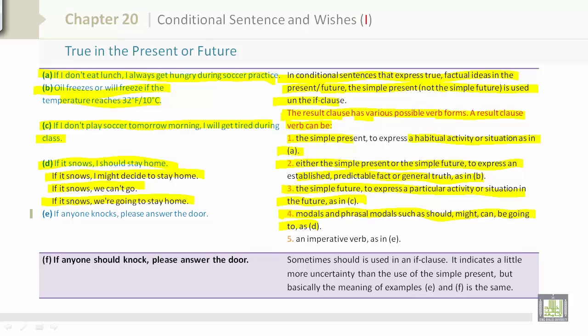And let's take a look at E: If anyone knocks, please answer the door. This would be an imperative verb, as in E. Numbers 1, 2, 3, 4, and 5 show the different result clauses. F: If anyone should knock, please answer the door. Sometimes should is used in an if clause. It indicates a little more uncertainty than the use of the simple present. But basically, the meaning of examples E and F are the same.